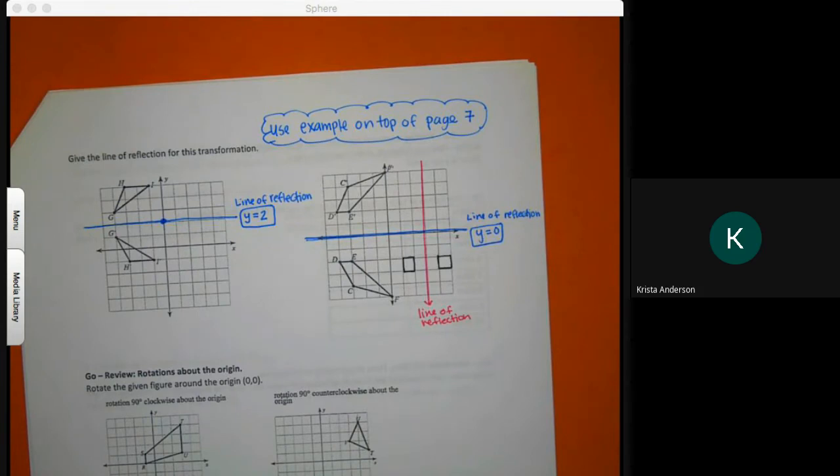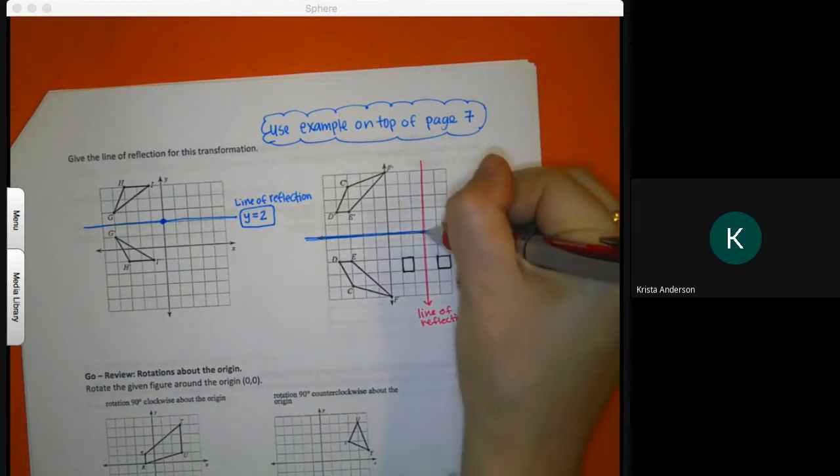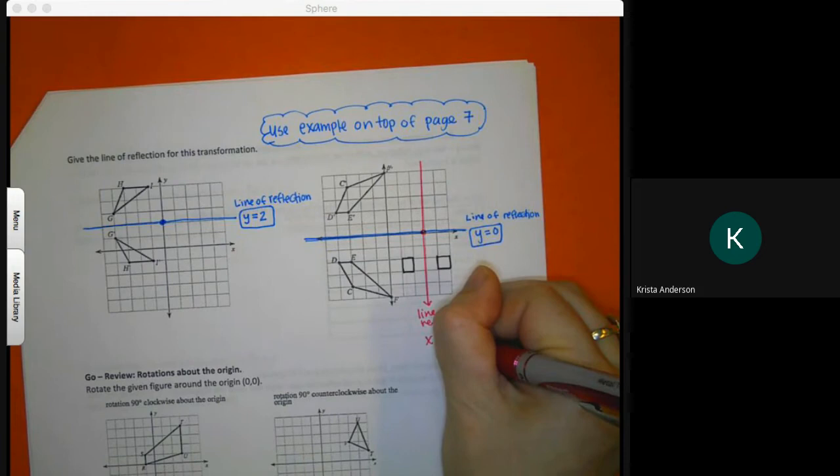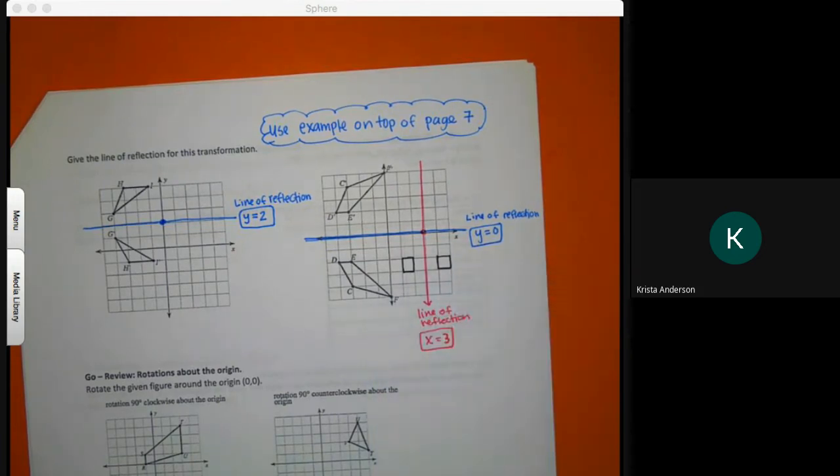Anybody think they know what that one would be? Aiden, do you think you know what that pink line would be? X. Oh, why X? Because it's going through the X. Goes through the X line. What number does it go through on the X? X equals 3. So when it hits the Y line, I say Y equals. When I hit the X line, I say X equals. And it's just the number that it touches.